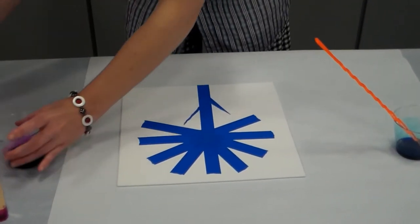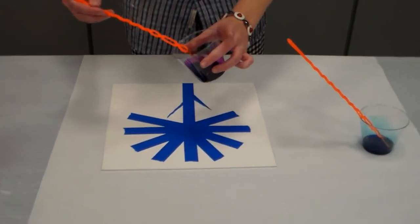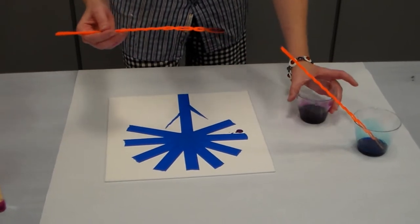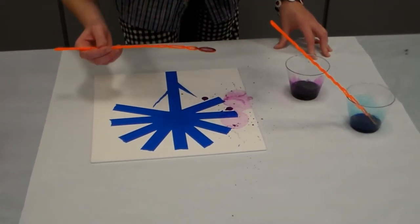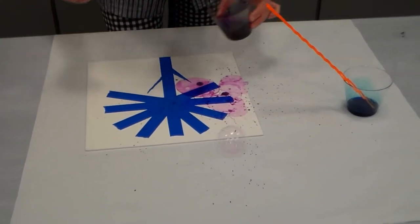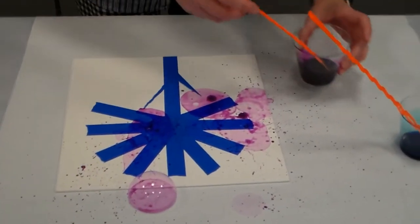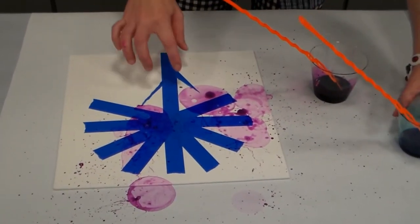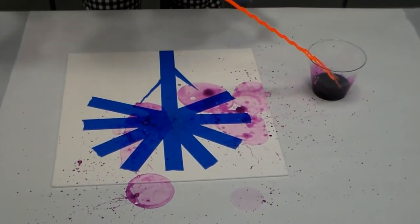And then the next part is super simple. Dip your wand into the bubble solution and start blowing bubbles, and what you're going to try to do here is get bubbles to land on the canvas as much as possible.